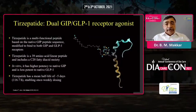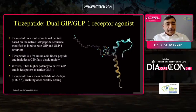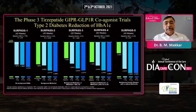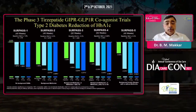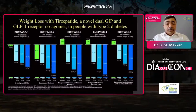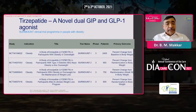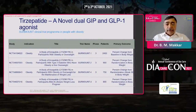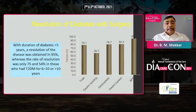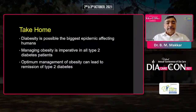Tirzepatide is a dual GIP/GLP-1 receptor agonist — a multifunctional peptide based on the native GIP peptide sequence. The Surpass trials series has clearly shown that tirzepatide leads to a significant reduction in A1c in the range of 2 to 2.5%. In addition, there is almost 11 to 12% weight reduction in patients treated with tirzepatide. It has not yet been approved for management of diabetes or obesity, but there is an obesity management clinical trial program called Surmount ongoing. Bariatric surgery remains a good option — studies have clearly shown it can induce remission of diabetes in a significant number of patients.